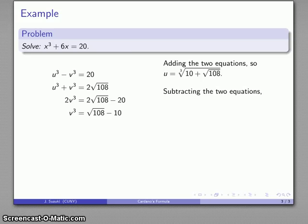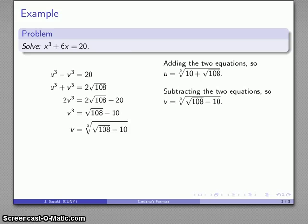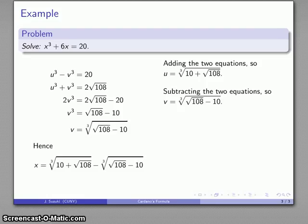And again, Cardano's rule says that x is the difference between these two. So my solution x = ∛(10 + √108) - ∛(√108 - 10).